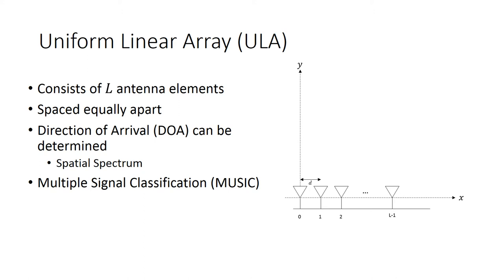and biomedicine. The Uniform Linear Array, or ULA, consists of L antenna elements along a single dimension that are spaced equally apart by some distance d. The Direction of Arrival, or DOA, can be determined and the spatial spectrum of the surrounding environment can be further classified.